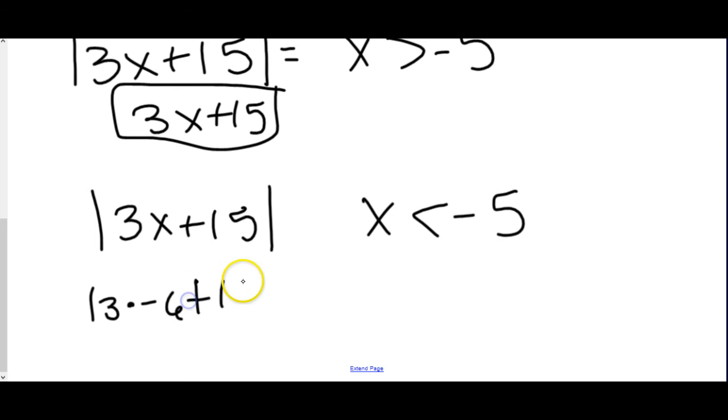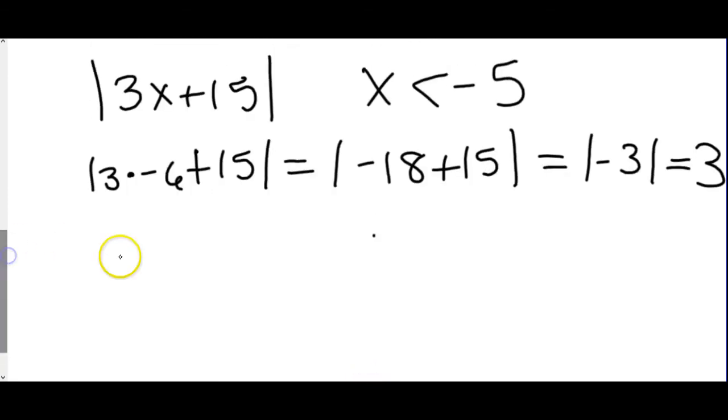3 times negative 6 plus 15. We do our multiplication first. That would be negative 18 plus 15, which is absolute value of negative 3. So now, again, we look for that pattern. On this one, in order to apply the absolute value, I would have to change the sign. That means the original expression, absolute value of 3x plus 15, I would have to change every sign.